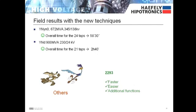For example, the 2293 is able to measure a wye-neutral wye-neutral 672 MVA transformer with 24 taps in just under one hour, and a wye-neutral delta 900 MVA transformer with 21 taps in just two hours and forty minutes.